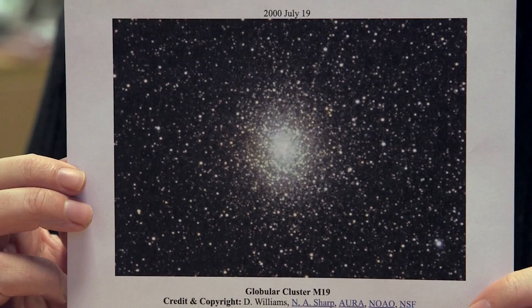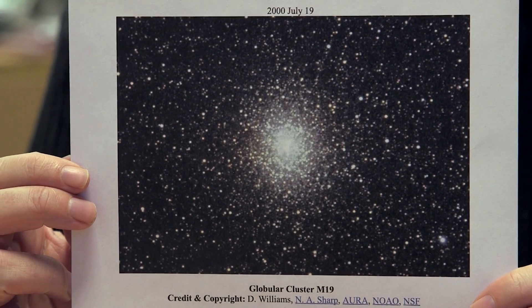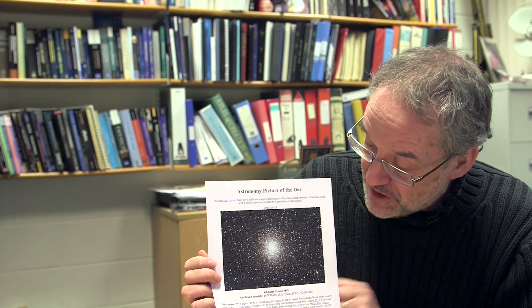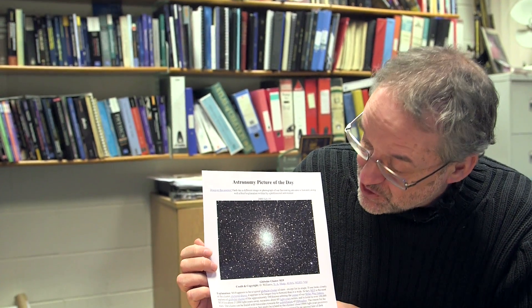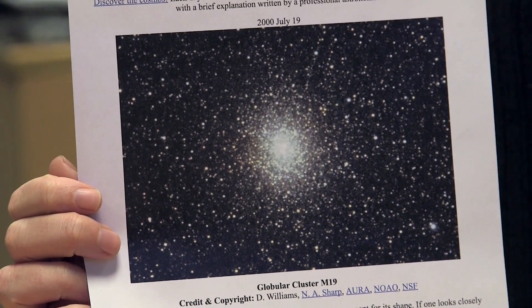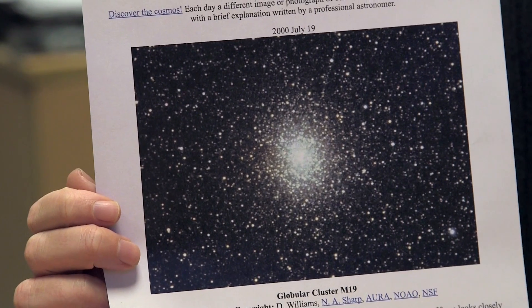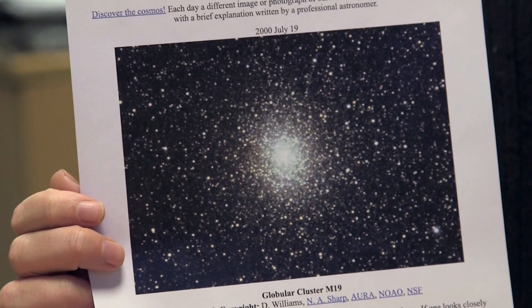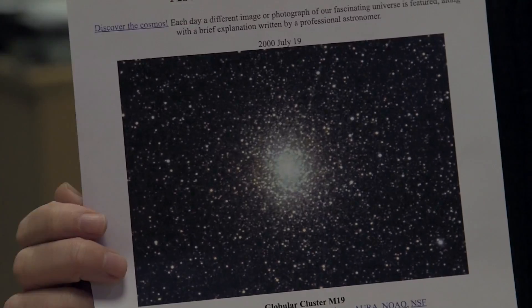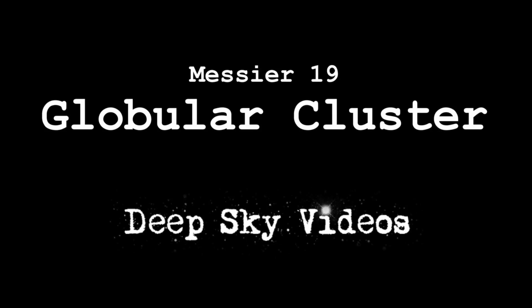M19 is a globular cluster. I have a picture of it here — it's quite pretty. It's unusual in that, if you look at it, you don't really need me to tell you: it's not round. The defining feature of globular clusters is that they're round, and this is actually the most elliptical globular cluster of all the globular clusters in the Milky Way.